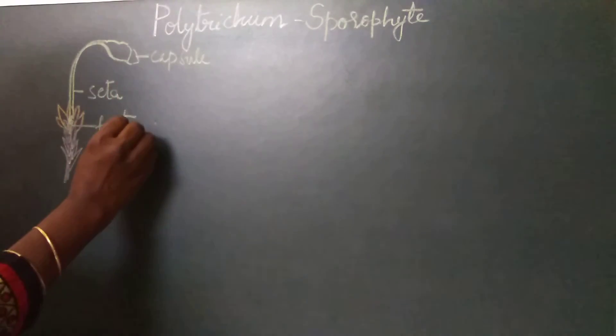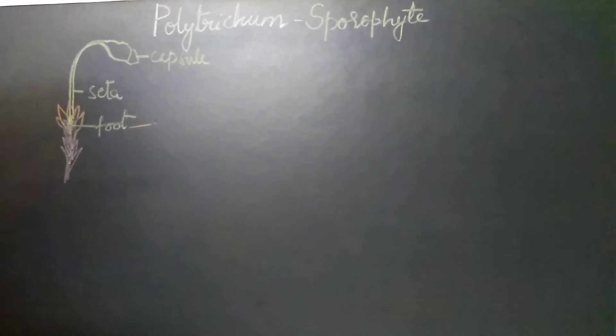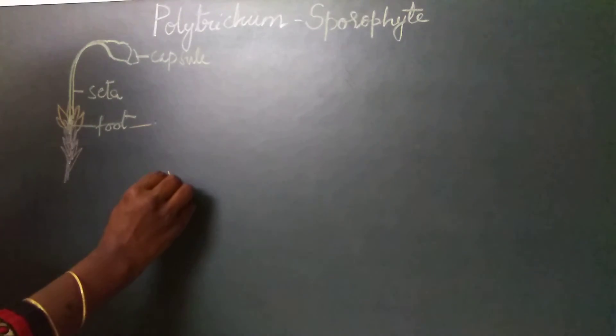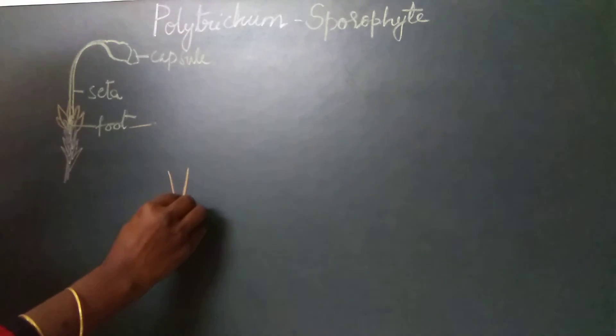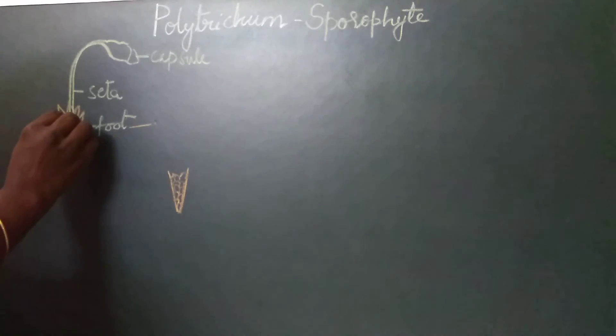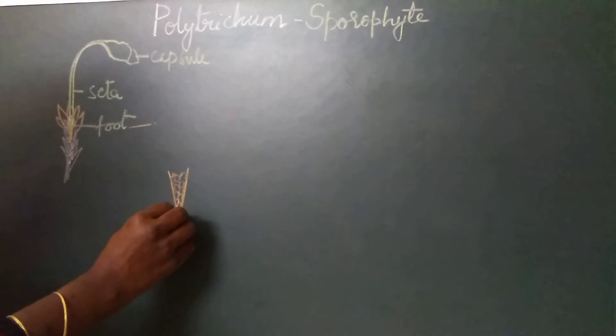The foot of Polytrichum sporophyte is a dagger-shaped structure made up of thin-walled parenchyma cells. This foot gets embedded into the tissue of the gametophore and helps in conduction of water and nutrients to the developing sporophyte.